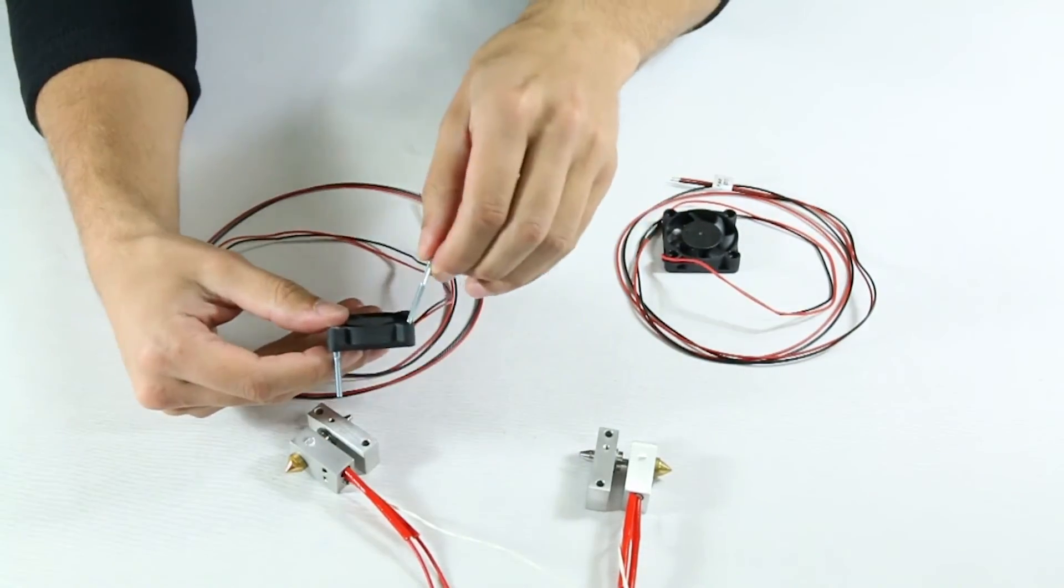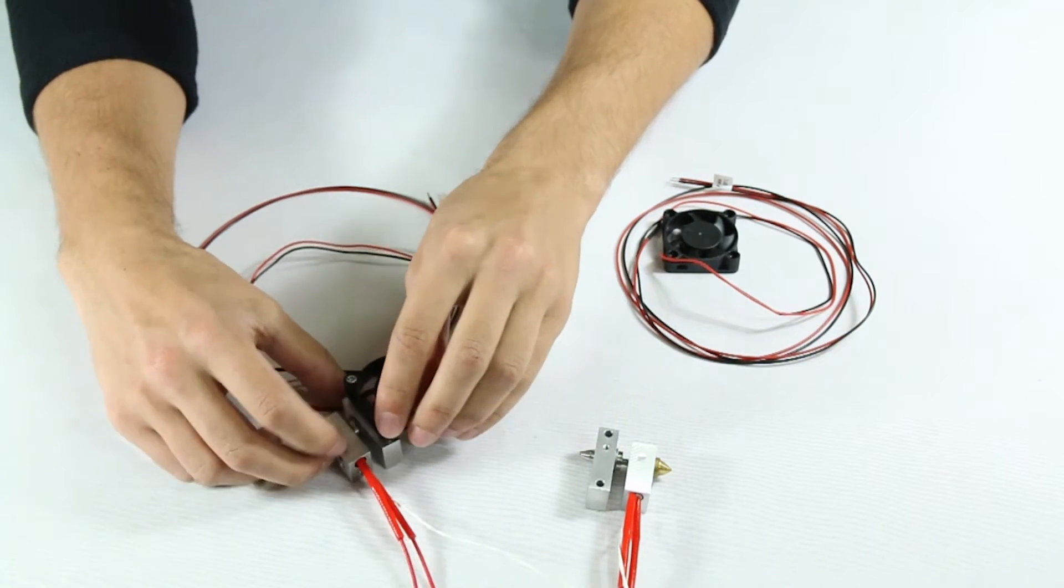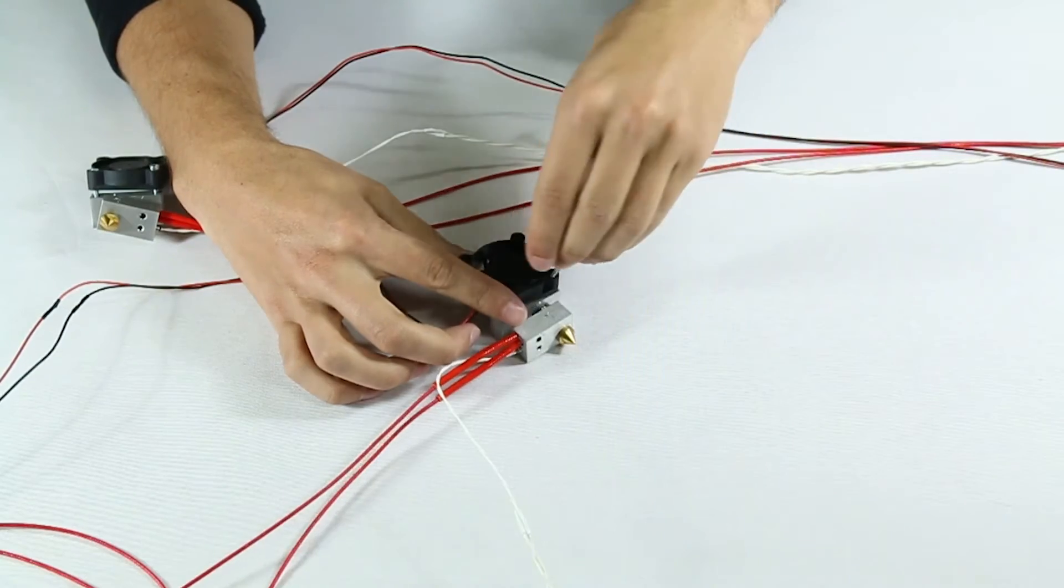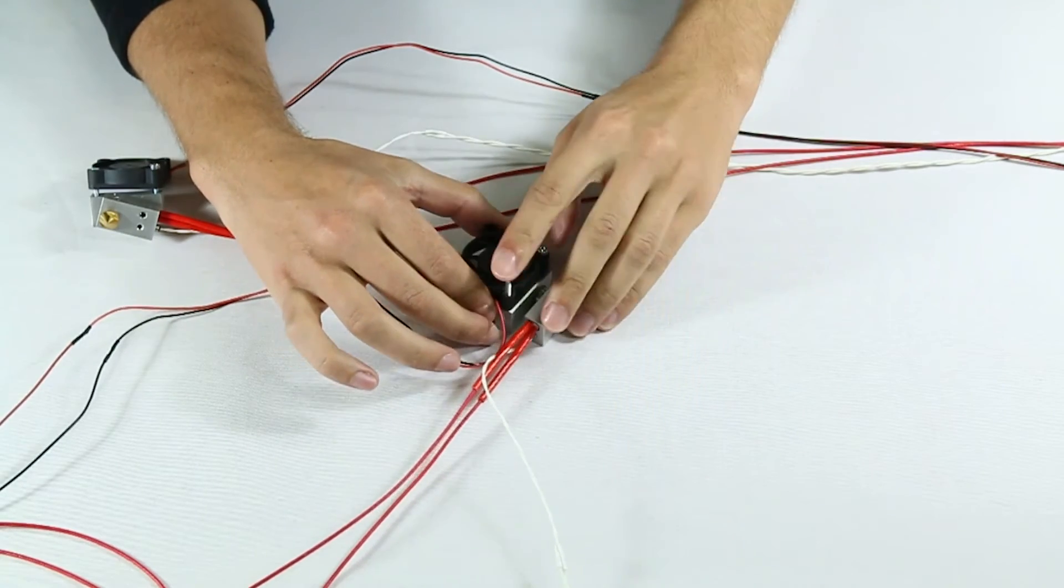Take your time with the wiring, as it can easily get tangled and you mustn't mix them up. So, match up the fan labeled 0 to the extruder hotend and heatsink labeled 0, and needless to say, do the same for the things with a 1 on them.